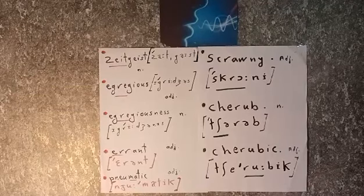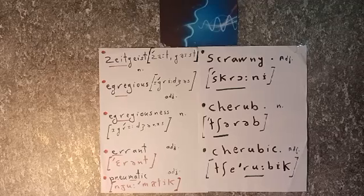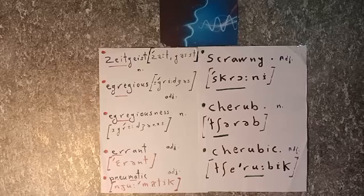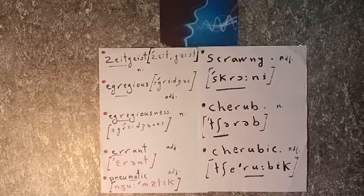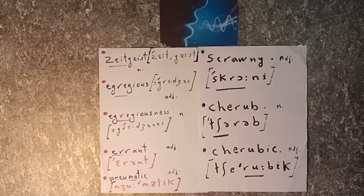Hi there, welcome back to another episode of English Pronunciation: Phonetics and Phonology. In today's list I have got eight words for you to learn how to pronounce. These are the words: zeitgeist, egregious, egregiousness, errant, pneumatic, scrawny, cherub, and cherubic. Let me start with the first word and see how the sounds operate within this word.